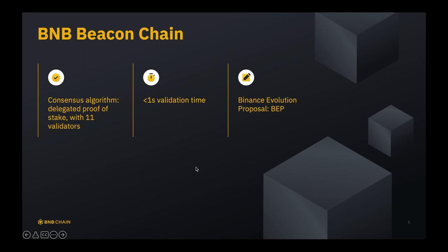BNB Beacon Chain reaches less than one second validation time, which is very fast. But it does not have very high programmability. This design is intentional in order to make BNB Beacon Chain easy to maintain and secure. The only thing you can do on BNB Beacon Chain is something called Binance Evolution Proposal, also known as BEP — a special scheme that works on BNB Beacon Chain.